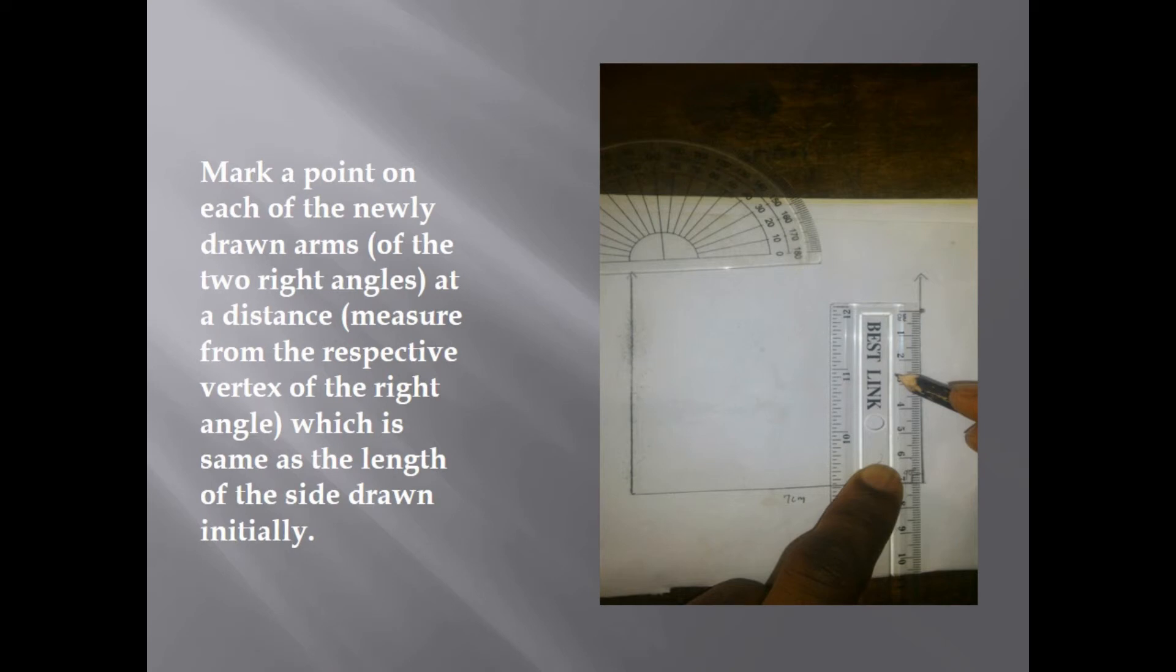Mark a point on each of the newly drawn arms of the two right angles at a distance measured from the respective vertices of the right angle, which is the same as the length of the side drawn initially. The rule is to mark a point which has the same measurement as the other side to get the same measurement for the other side of the right angle.